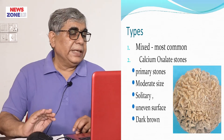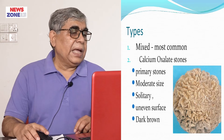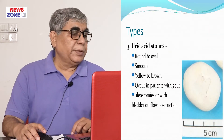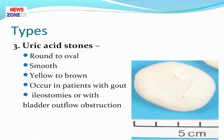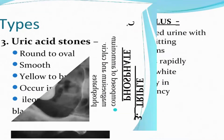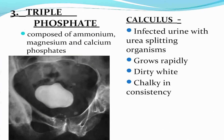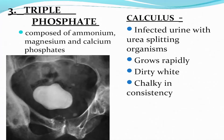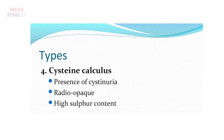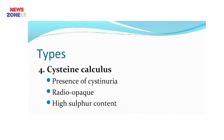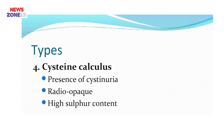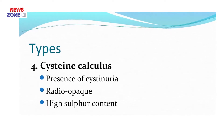Calcium oxalate stones have a rough surface and are of moderate size. Uric acid stones are round and oval shaped with a smooth surface. Triple phosphate stones are similar in nature. Cystine calculi are notable for being mostly radiopaque due to their high sulfur content.